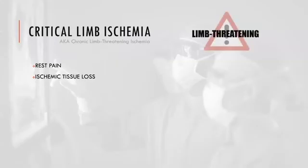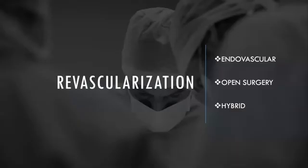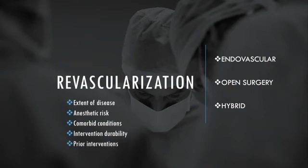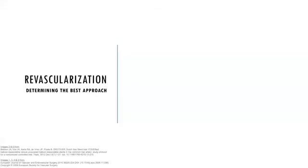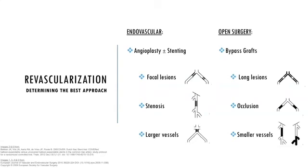Rest pain and tissue loss are limb-threatening and treated with revascularization to relieve pain, heal wounds, and prevent major amputation. When choosing between open versus endovascular approaches, vascular surgeons consider the pattern and extent of disease, the patient's anesthetic risk, severity of comorbidities, durability of the intervention, prior failed interventions, and anatomic factors. In general, angioplasty and stenting is better for shorter or focal lesions, stenosis rather than occlusion, and large diameter vessels. Bypass grafts are preferred for longer segments of stenosis or occlusion, or diffuse widespread disease, and have better long-term patency but are avoided in frail patients.